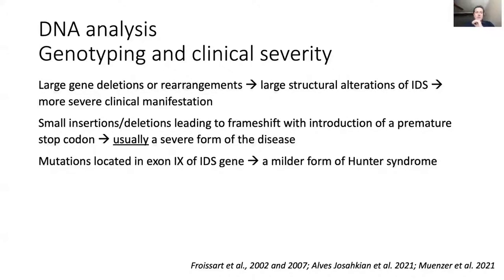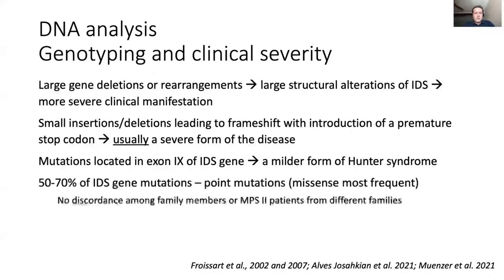Mutations on exon 9 — the part that is being translated, not spliced out like introns — are usually linked to a milder form of Hunter syndrome. Point mutations, where only one single nucleotide in the DNA is deleted, inserted, or substituted, are the most common, representing 50 to 70 percent of IDS gene mutations. These are usually missense mutations.